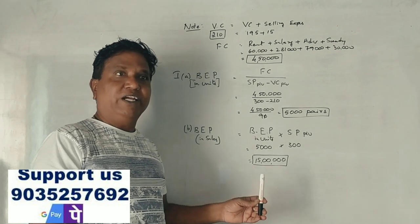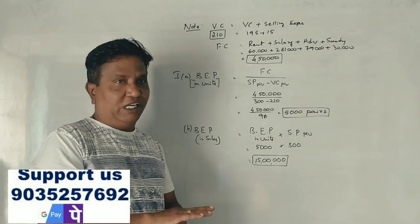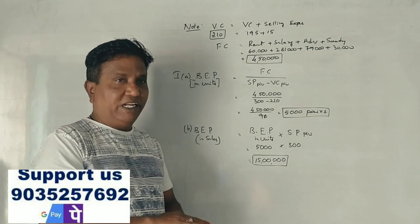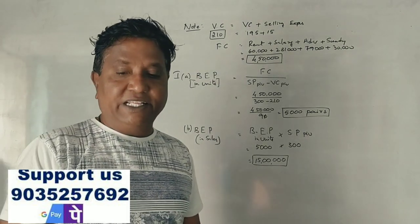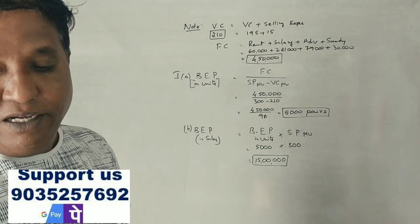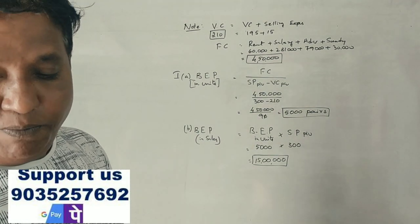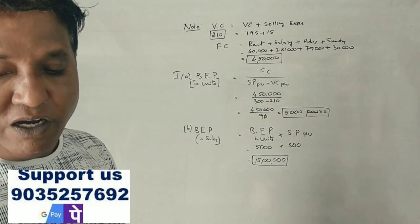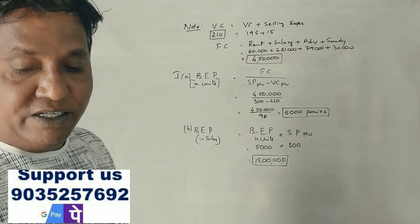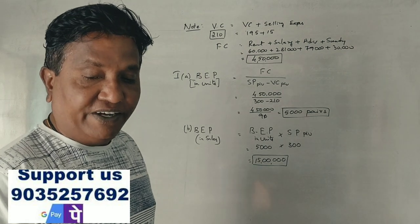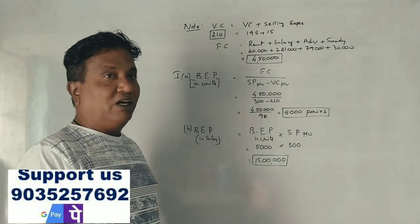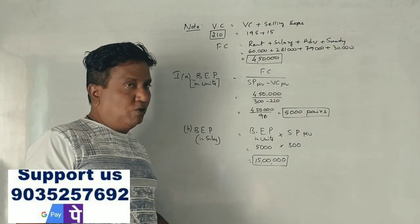At the break-even point there is no profit and no loss. Next question: what is the profit or loss of the store if 35,000 units are sold?